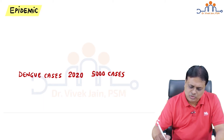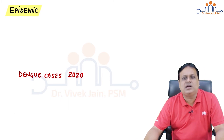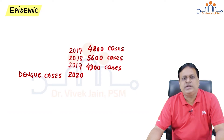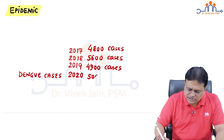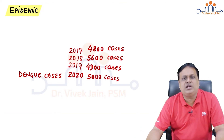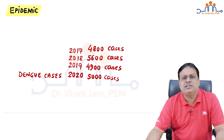Suppose I ask you to predict how many dengue cases will occur in Delhi this year. We'd look at the last 3 to 5 years of data. There were 4800 cases in 2017, 5600 in 2018, and 4900 in 2019. Based on this, we can calculate it will be around 4800 to 5600 — so around 5000 cases are expected. If there are 5000 cases this year, that is the normally expected number, so it is not an epidemic. But if the number is suddenly much higher, it will be declared an epidemic.